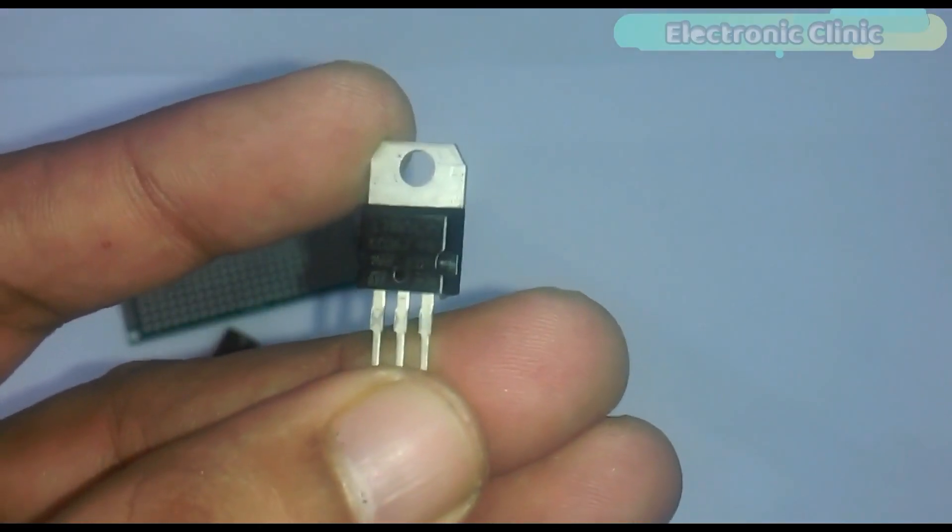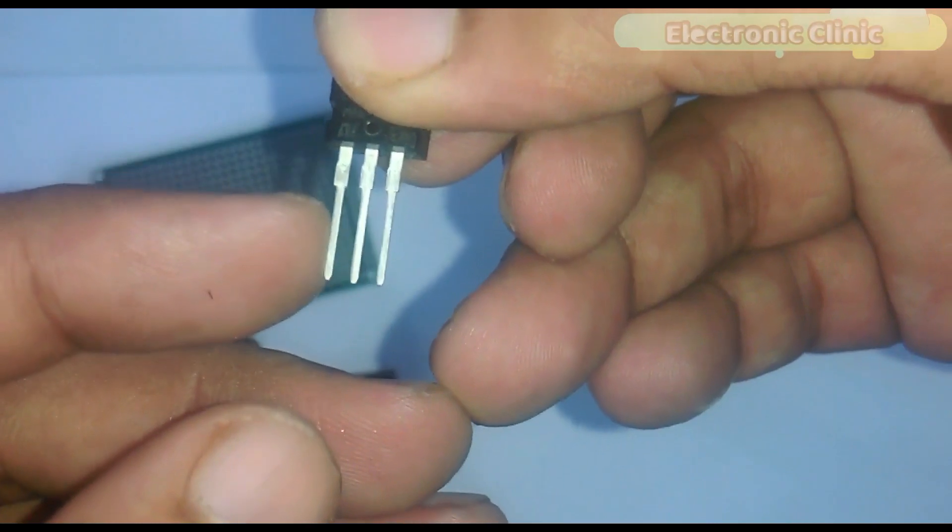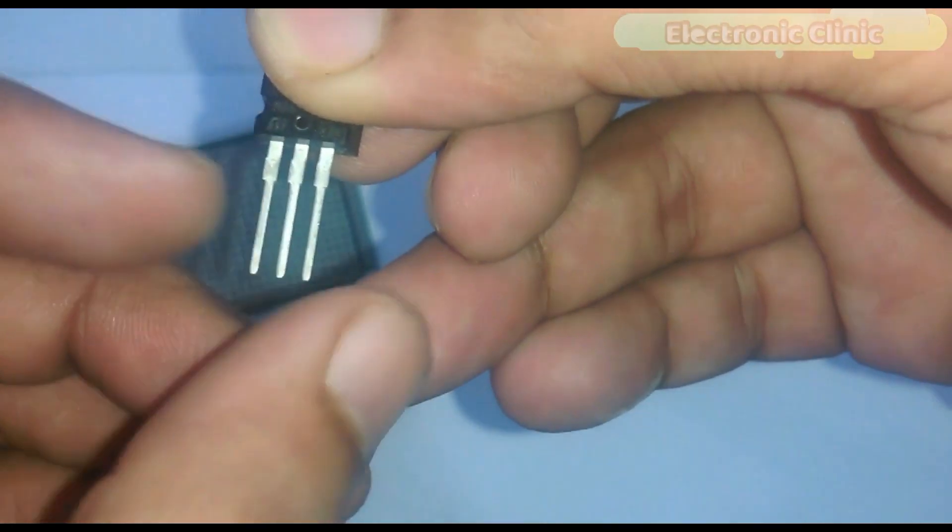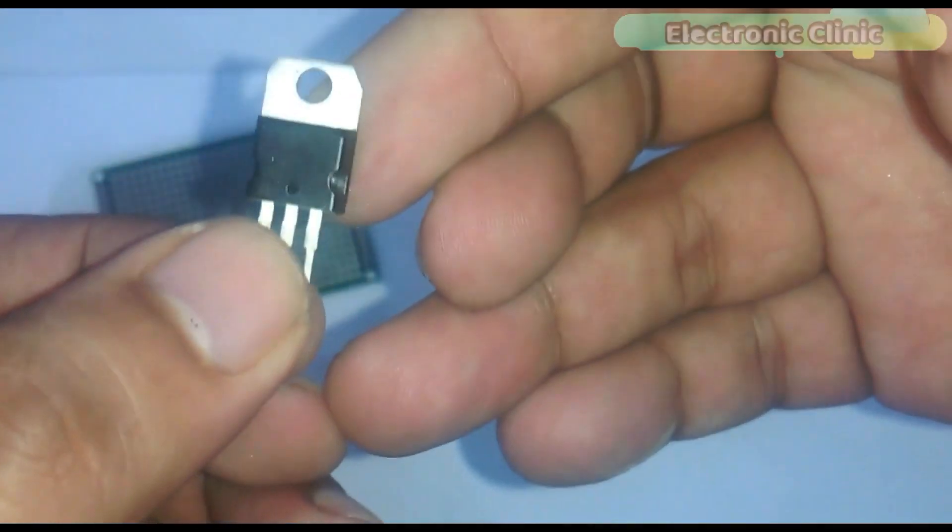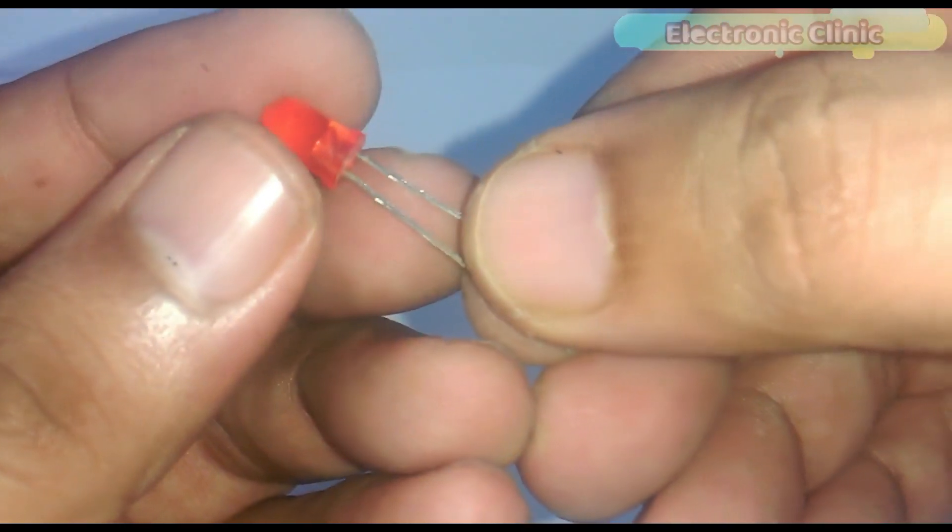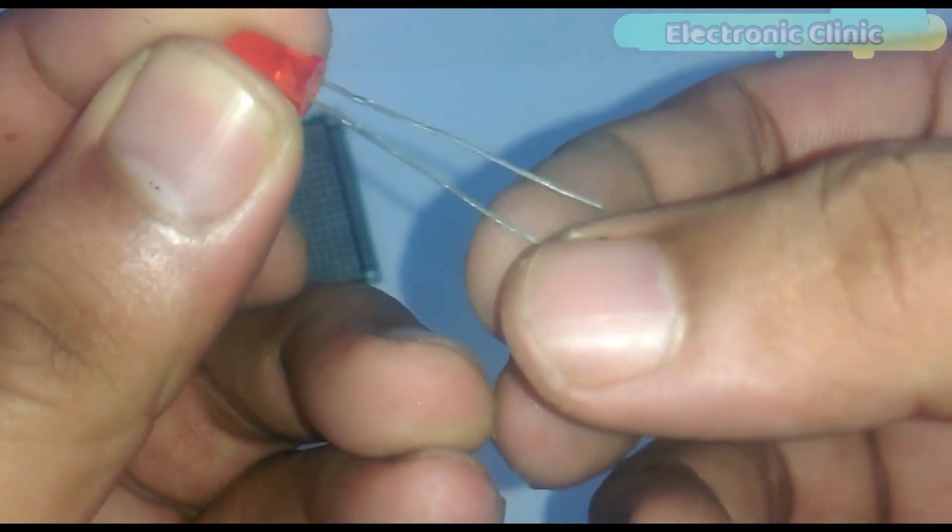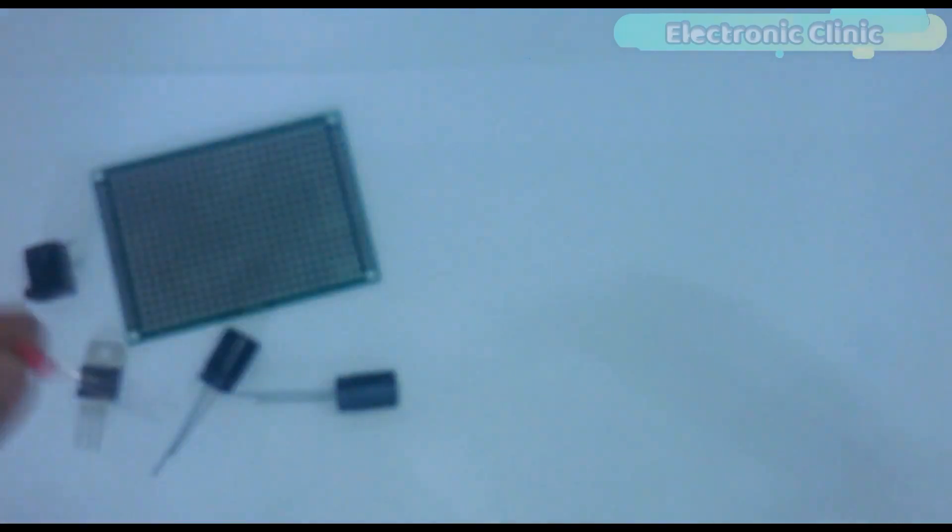Number five 7805 voltage regulator. First leg is the input, middle one is the ground and the third one is the output. Number six LED. The longer leg is the anode and the shorter one is the cathode.